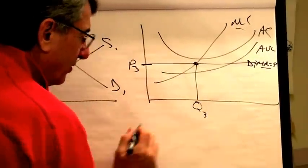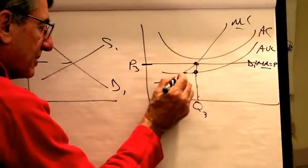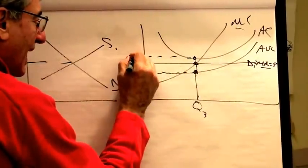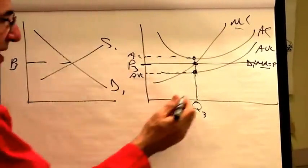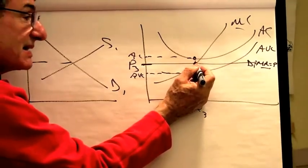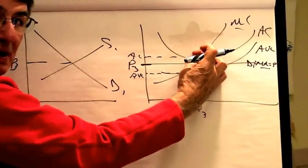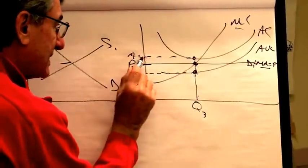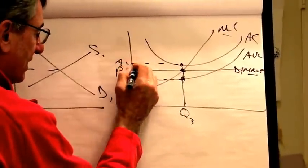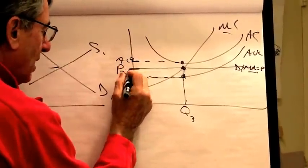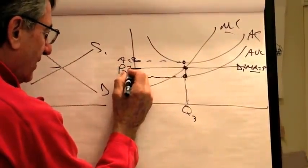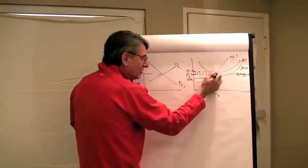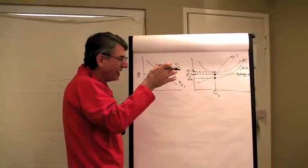But as we go back up, the price is sufficient to cover all of the average variable cost but not all of the average cost. This means all of the variable costs are covered and some of the fixed costs, but they're going to lose some of their fixed costs. Since the average cost is $9 and the price is only $7, they're going to lose $2 on each unit. This gap between the average cost and the price is reversed — it means there's a loss.